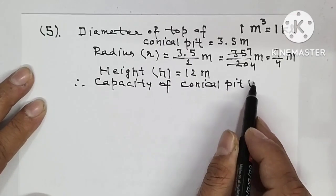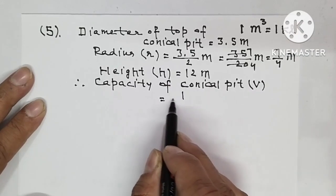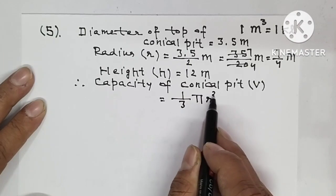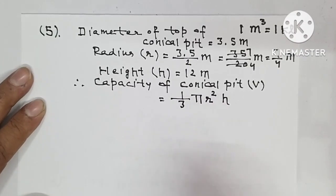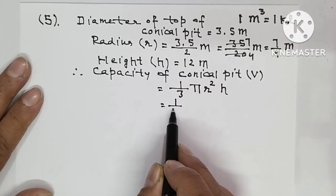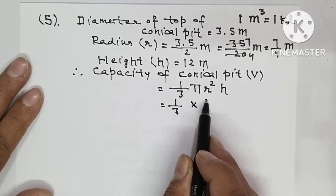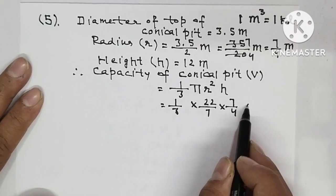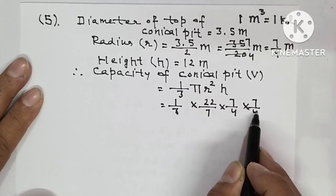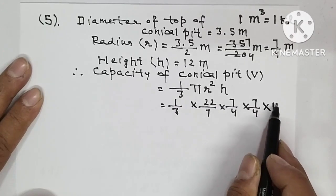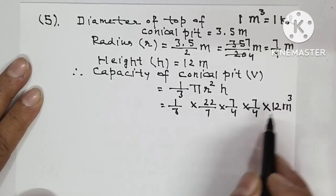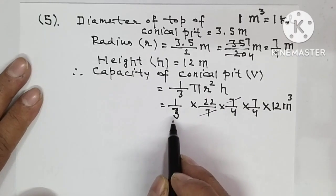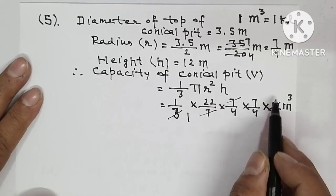V is equal to 1 by 3 π r squared h. So substitute the values: 1 by 3 into π is 22 by 7, into 7 by 4, into 7 by 4, into h is 12. This is meter cube.